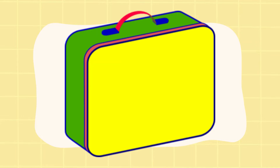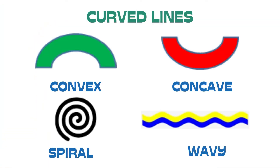So, aside from these presented objects, there are also other objects that are made out of straight lines. So, let's proceed now to the curved lines. The curved lines are convex, concave, spiral, and wavy. These four lines here are examples of curved lines.